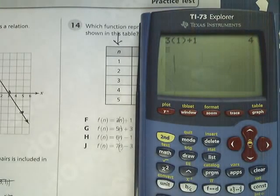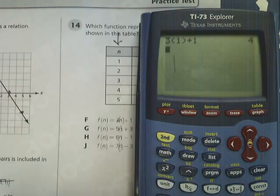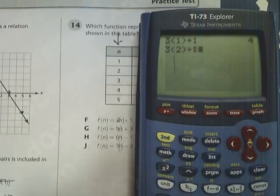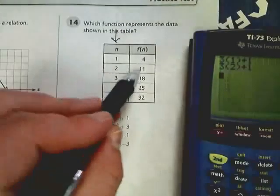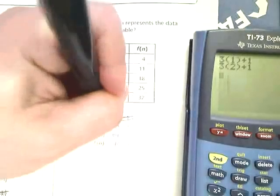You want to make sure that at least 3 inputs give you the predicted output. Plug in 2. That gives me 7, but it's supposed to give me 11, so that doesn't meet my prediction, so that's out.